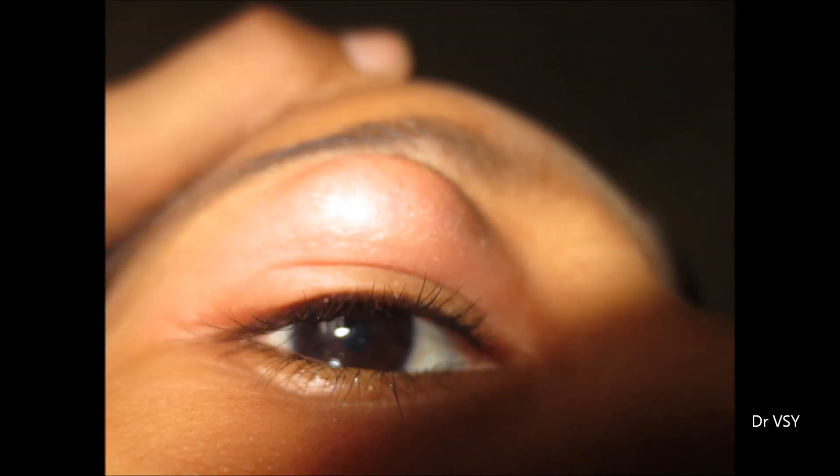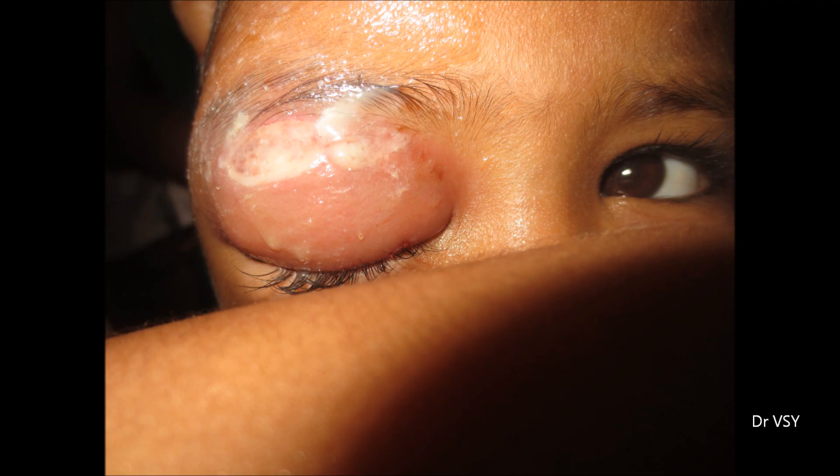There is quite significant cellulitis. In the eyelid there are many layers: the skin, the subcutaneous tissue, the orbicularis oculi, the orbital septum, the tarsal plate, and the palpebral conjunctiva — all of these can be damaged if not timely treated.